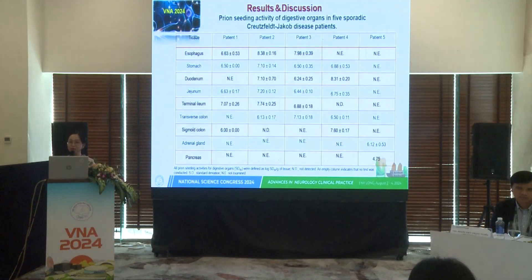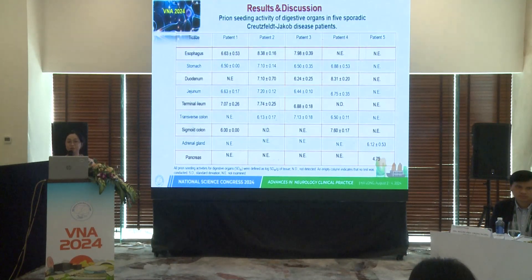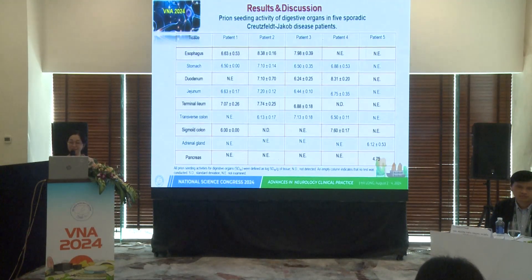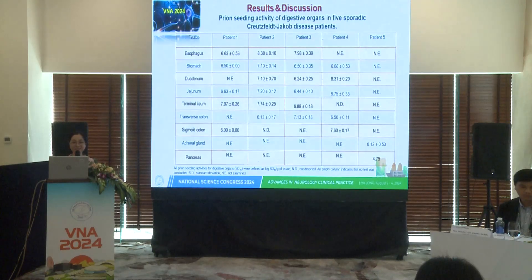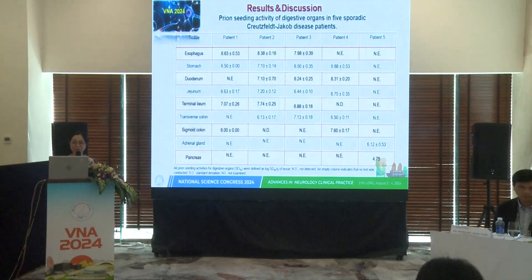Now for the results: prion seeding activity in digestive organs from five sporadic CJD patients. We examined eight of nine digestive organs across five patients. The highest seeding activity was found in the esophagus, averaging approximately 6.63 ± 0.05